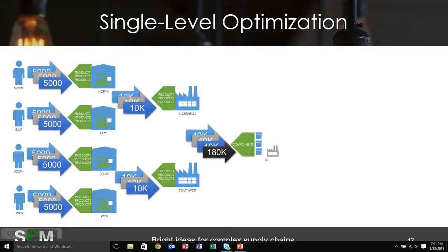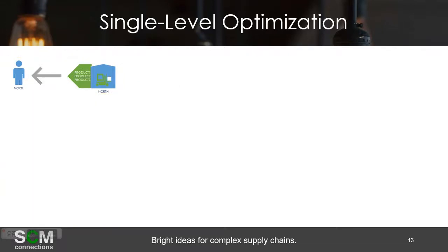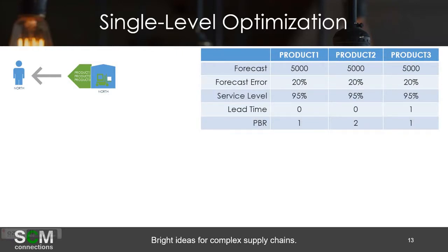For single-level optimization, that is essentially talking about optimizing inventory at only one location. If we go to our data model and focus on customer group North and that North warehouse — optimizing that inventory level based on a forecast of 5,000, forecast error of 20%, service level of 95%, lead time of 0 or 1, and PBR of 1 or 2 respectively for those products.